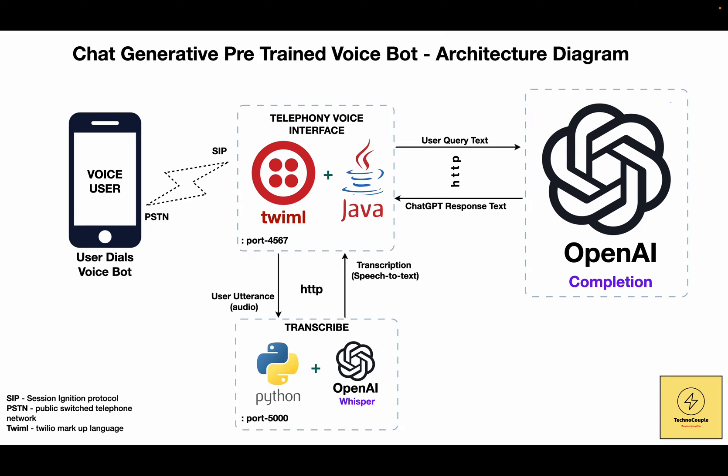Once you have the ngrok URL, you need to configure your application URL in Twilio's webhook settings. When the caller dials the phone number, it will invoke your application using the configured webhook. This Java application, which gets invoked from Twilio, is developed using the Spark framework. Spark allows compact coding and it starts super fast.